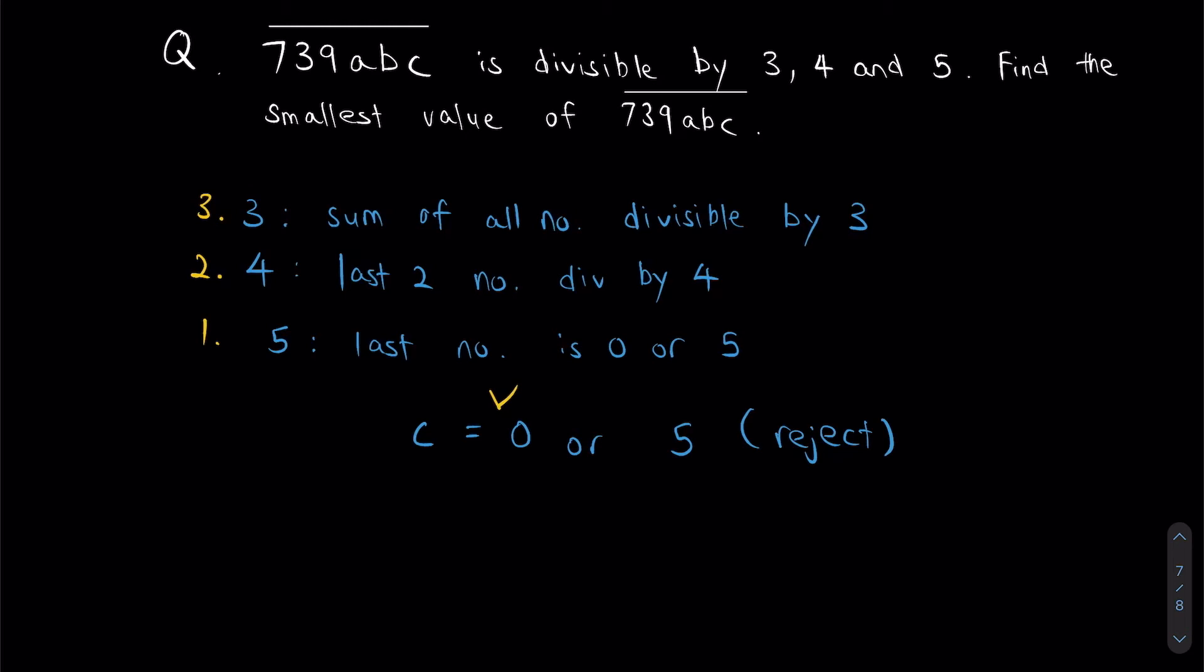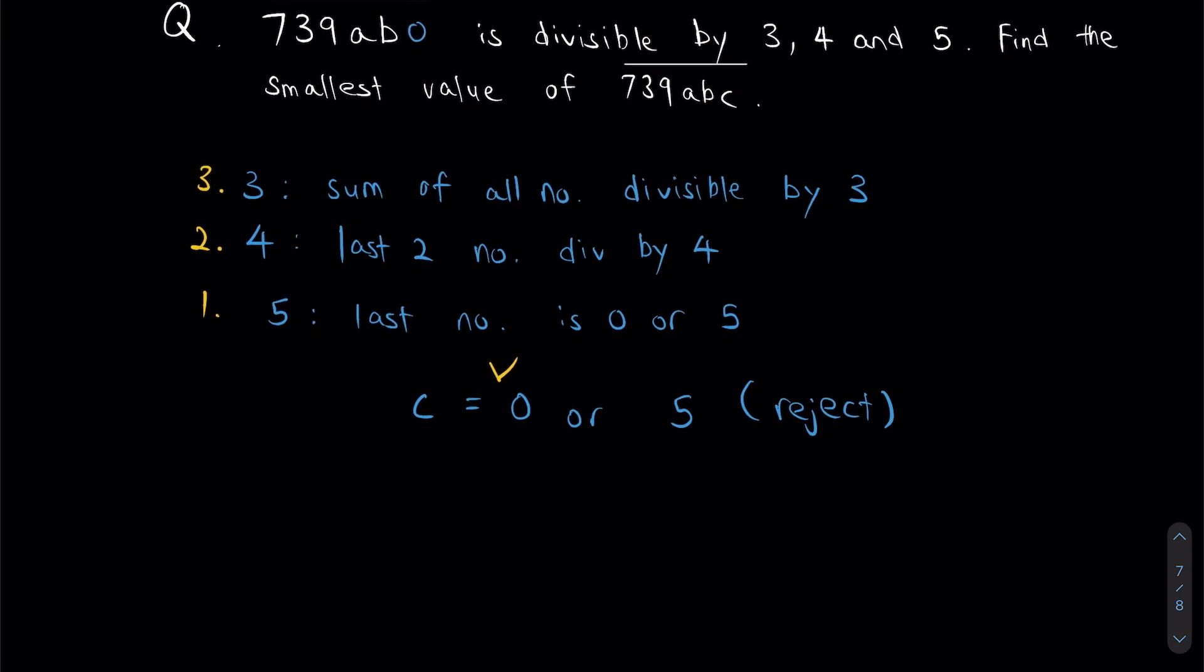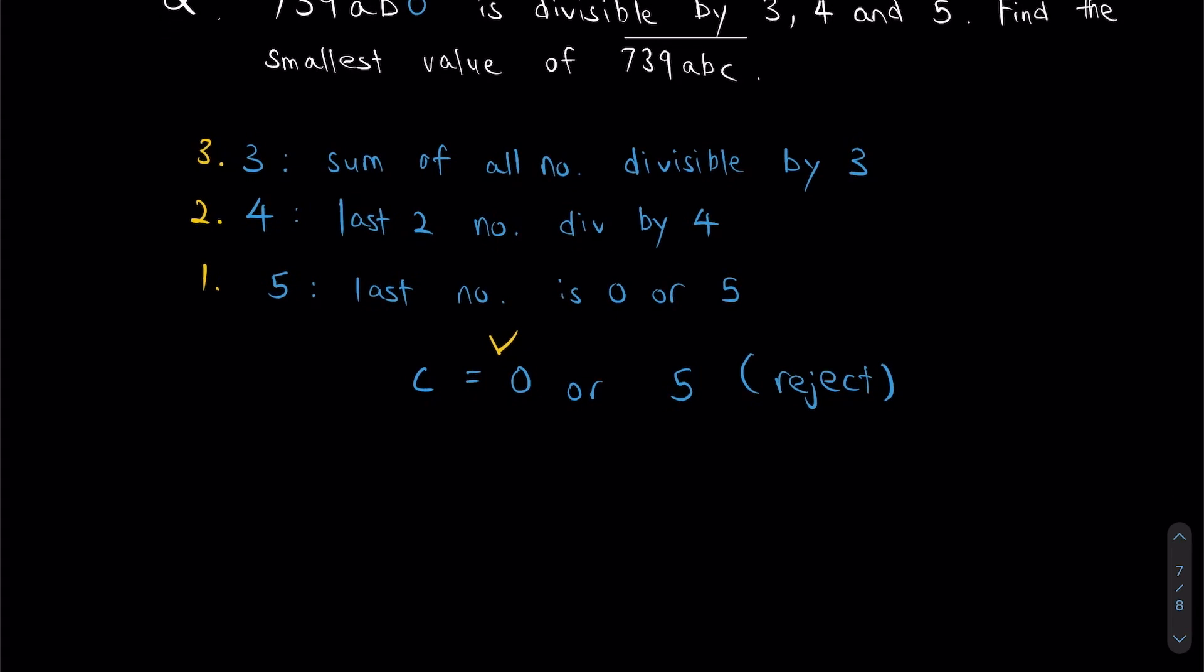So I can safely conclude that C will be equal to 0. And to make our lives a bit easier, I'm going to change the C in the question now to a 0 for ease of reference. So now let's check the divisibility of 4, because that's the next easiest one to do. Essentially what it's saying is, B0, this number right here, is divisible by 4.